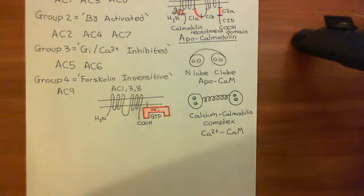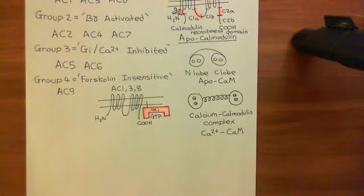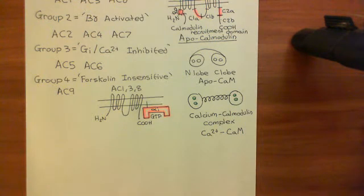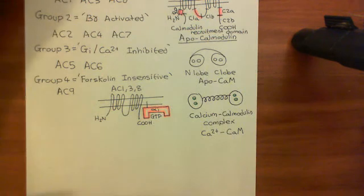Overall, these alpha-I GTP subunits will inhibit adenylyl cyclase 5 and adenylyl cyclase 6, and will stop the calcium-mediated activation of adenylyl cyclase 1, 3, and 8. The key point is that alpha-I GTP subunits don't affect every single adenylyl cyclase, but they do affect a good majority of them. Contrast that to the alpha-S subunits, or the alpha-olf subunits, which actually activate all nine forms of adenylyl cyclase. In the next video, we'll turn our attention from the alpha subunit of the heterotrimeric G protein towards the beta-gamma subunit.